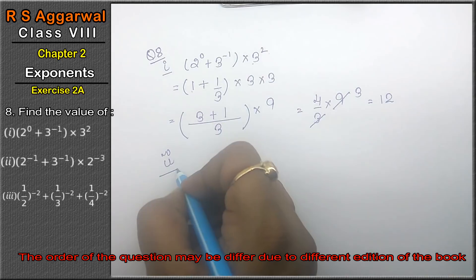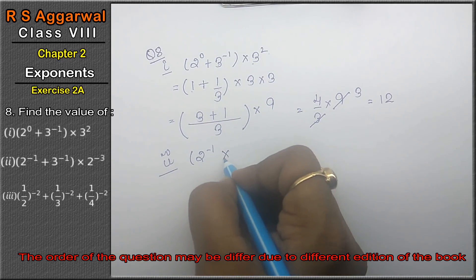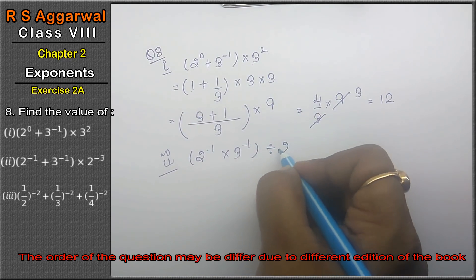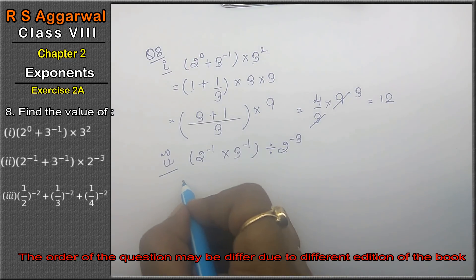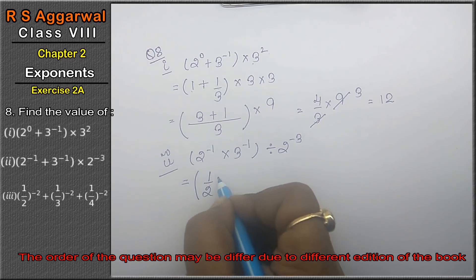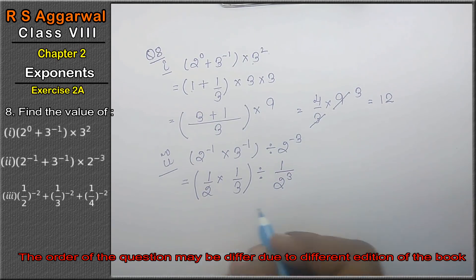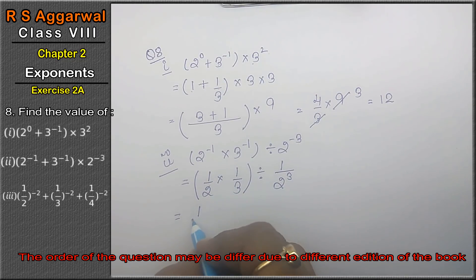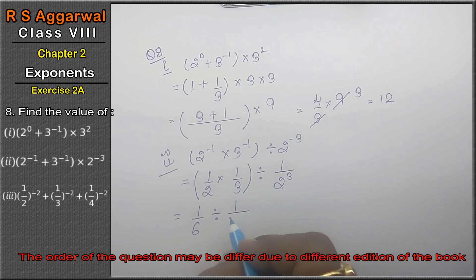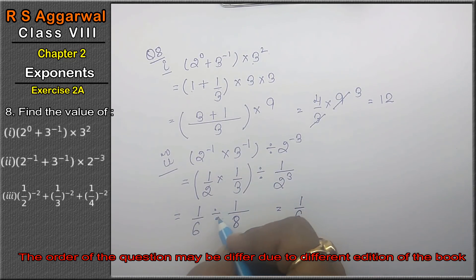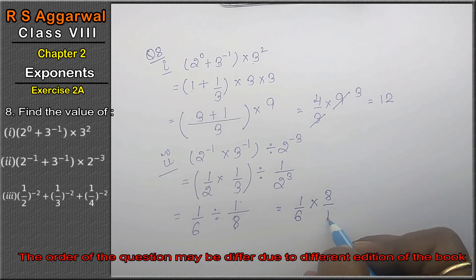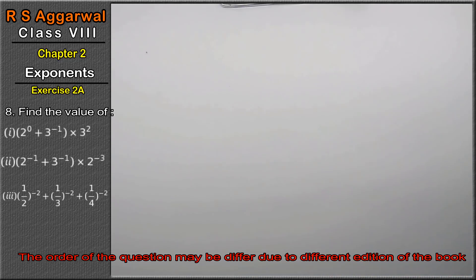Let's do second part. Second part is 2 ki power minus 1 into 3 ki power minus 1 divided by 2 ki power minus 3. To ye kiya aya? 2 ki power minus 1 ka matlab 1 upon 2. 3 ki power minus 1 ka 1 upon 3, divided by 2 ki power minus 3 ka matlab hai 1 upon 2 ki power 3, that means 8. Ab yehaan divide hai, toh divide se pehle ki digit as it is, divide ko multiply mei change kiya. 2×3 is 6, 2×4 is 8. That means 4 upon 3 is the answer.